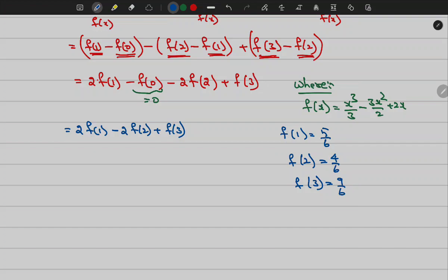Now let me substitute f of 1, f of 2, f of 3. Then it can be written as 2 into 5 by 6 minus 2 into 4 by 6 plus 9 by 6. So 10 minus 8 plus 9 divided by 6. Hence my answer is 11 by 6.